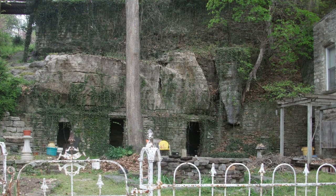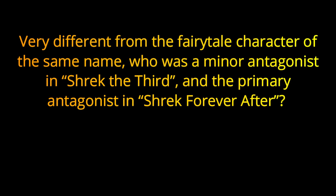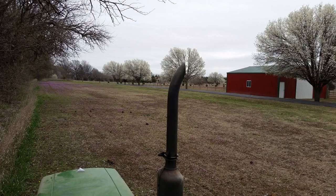Question 4. Very different from the fairy tale character of the same name, who was a minor antagonist in Shrek the Third and the primary antagonist in Shrek Forever After? The answer is Rumpelstiltskin.